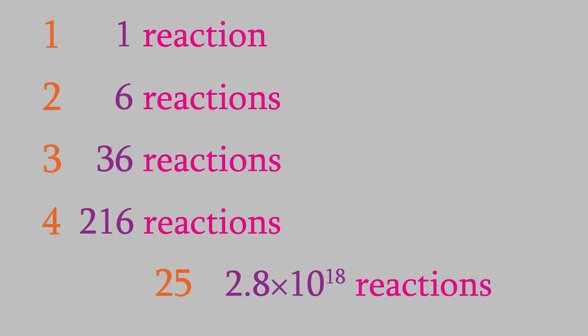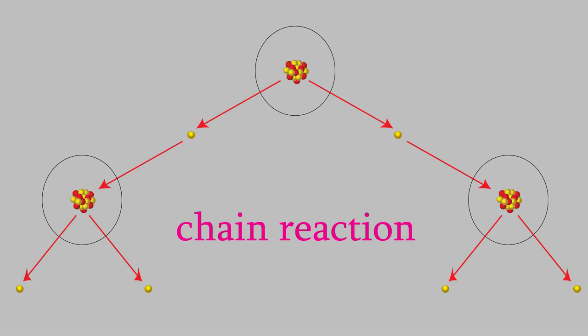Since each of the steps takes only a fraction of a second, this means that a huge number of reactions occurs in a very short amount of time, and each of them is highly exothermic, so it generates a huge amount of energy very quickly. Reactions like this, in which each reaction releases neutrons that cause several nearby atoms to react, it's called a chain reaction.